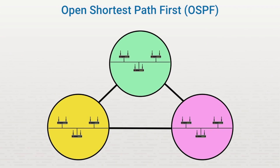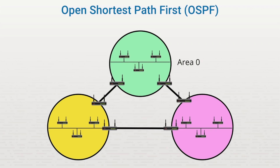The routers within an area only keep track of the routes within that area. OSPF requires you to have a special area called Area 0. Area 0 is the backbone that connects all the other areas together. Every other area on the network must have a connection to Area 0, either directly or indirectly. There are two types of routers in this configuration: internal routers and area border routers. Internal routers share information about their routes within their assigned areas. Area border routers sit on the edges of areas to connect them together and share information between them. If an area isn't directly connected to Area 0, it can connect indirectly through an area border router, in which case Area 0 would extend to connect with that area.